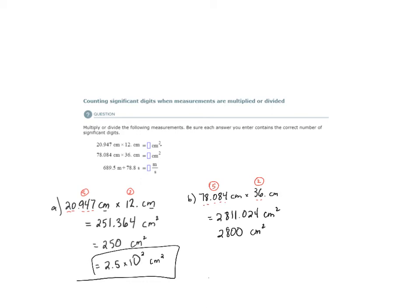But a better way to report this, to 100% specify that we have two significant digits, is to report it in scientific notation. So that would be 2.8 times 10 to the 3 centimeters squared.